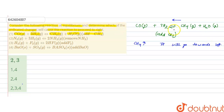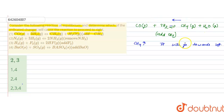The reaction will not proceed to the right when methane is added in gaseous state, because the increased concentration of methane is opposed by the equilibrium. The equilibrium shifts back to normal by reacting the products to form reactants again — the reaction goes in the backward direction, towards left, not right. So this option is incorrect.